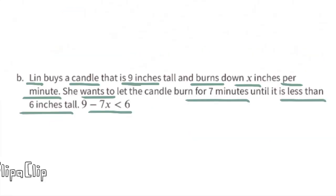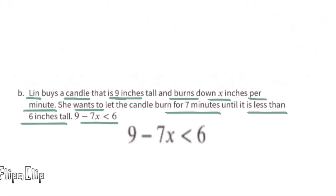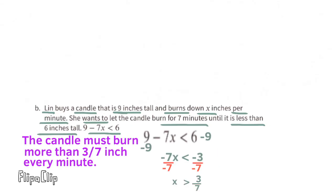Part 5b: Lin buys a candle that is 9 inches tall and burns down x inches per minute. She wants to let the candle burn for 7 minutes until it is less than 6 inches tall. The inequality is 9 minus 7x is less than 6. Subtract 9 from both sides, then divide by negative 7 and switch the inequality sign. The solution is x is greater than 3/7, meaning the candle needs to burn down more than 3/7 of an inch each minute.